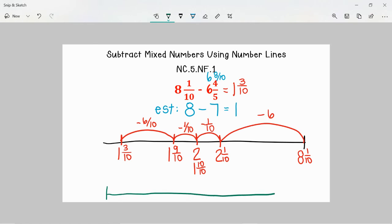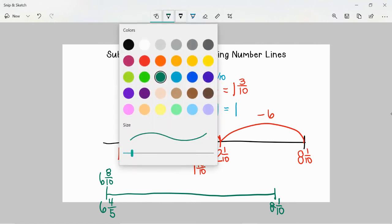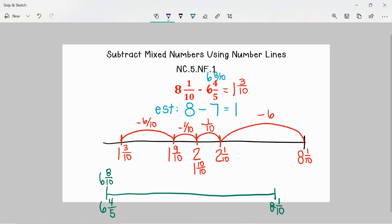We would start at 6 and 4 fifths, and here we are using our knowledge of inverse operations to find the difference. We are going to figure out, well what is the distance between 6 and 4 fifths and 8 and 1 tenth. And so we know already that we are looking at 6 and 4 fifths as 6 and 8 tenths, so I am also just going to label that here. And so now we can go ahead and start to work our way up to 8 and 1 tenth. I will just switch colors so we can see this clearly here.